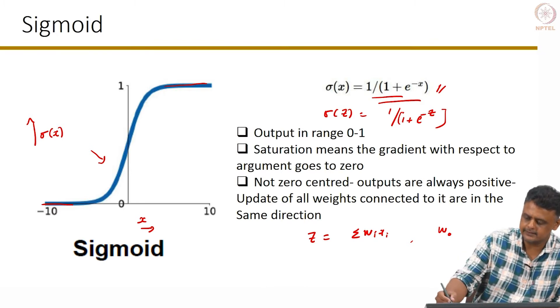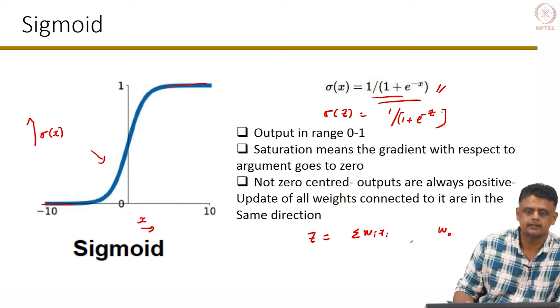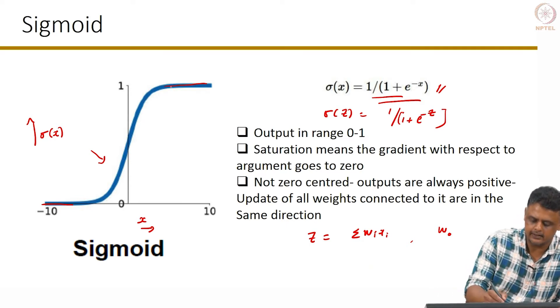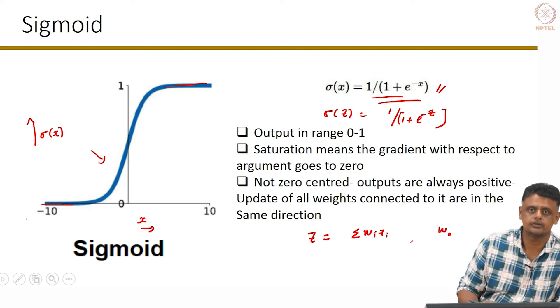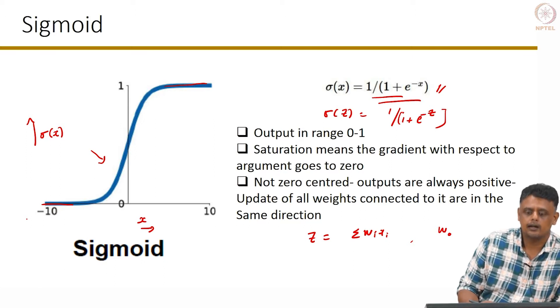What this says is that if z is very large, that is summation wi xi is very large, then very large positive as well as very large negative values of summation wi xi would lead to the sigmoid function being saturated.